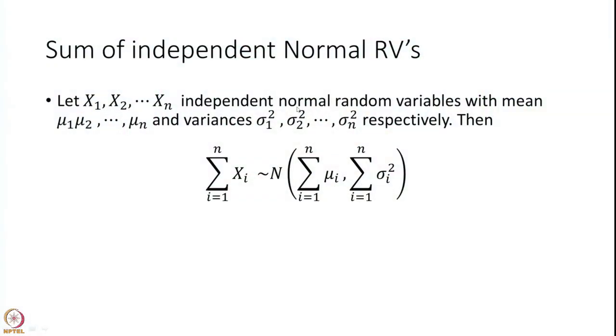Now let us recall a few important properties. Let x1, x2, ..., xn be independent normal random variables with means μ1, μ2, ..., μn and variances σ1², σ2², ..., σn². Then the sum of these random variables is also distributed as normal with mean equal to the sum of the means and variance equal to the sum of the variances. Remember, when random variables are independent, the variance of their sum equals the sum of their variances.